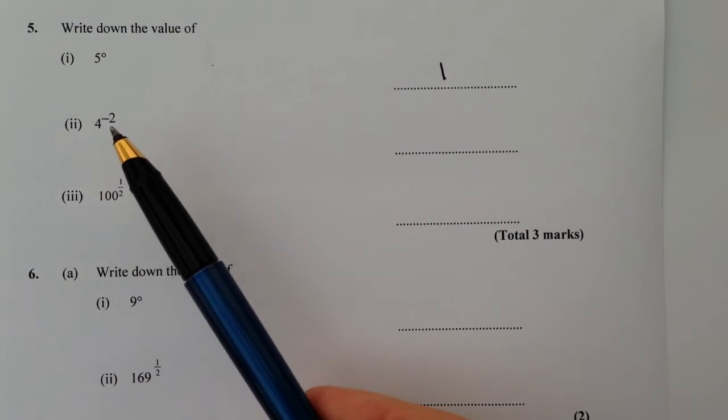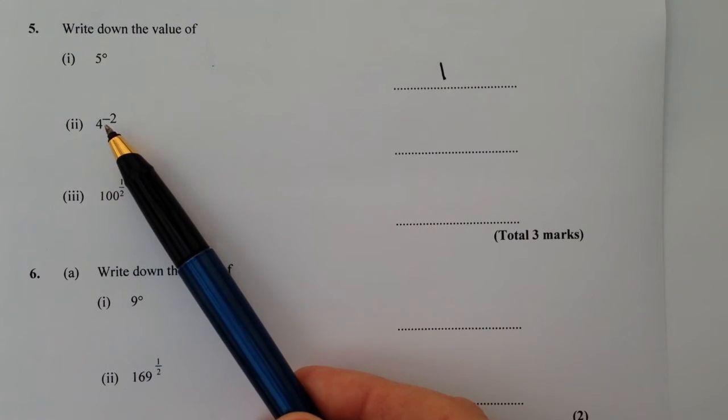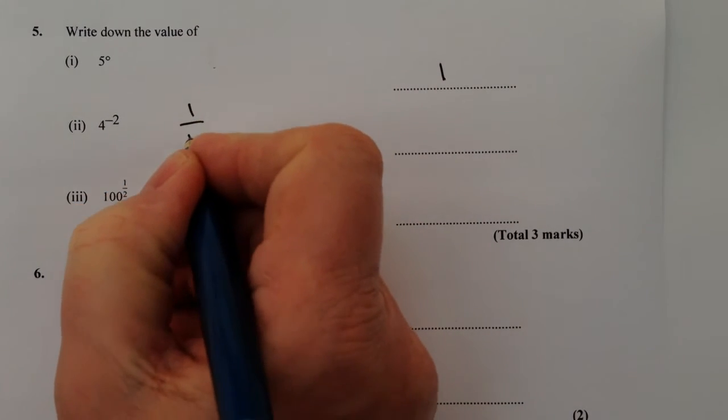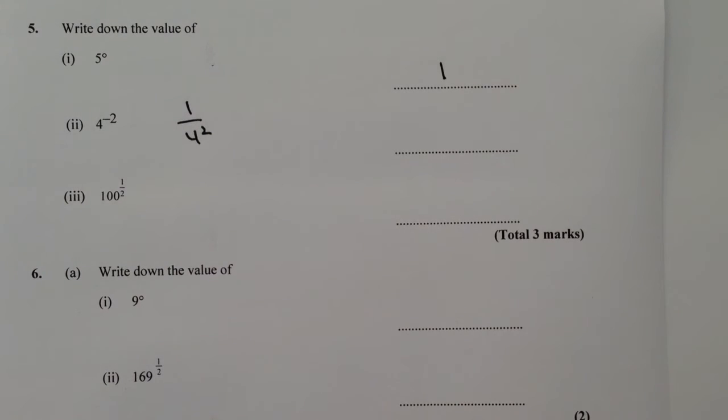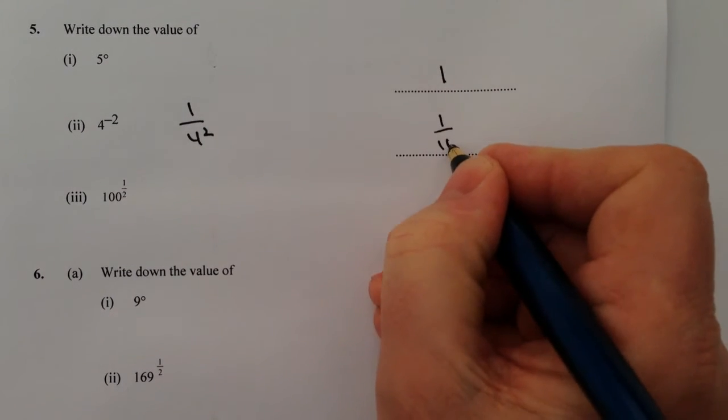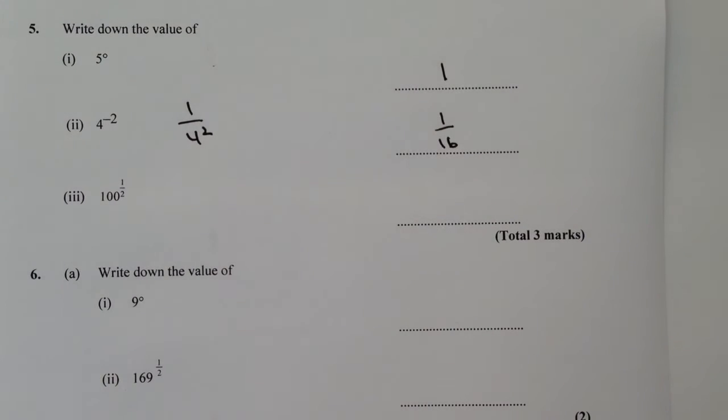OK, the next one is that where we've got a negative indice, it basically means the reciprocal. So I can rewrite that as one over four squared. And then if I calculate that, that's going to be one over four squared, which is 16.